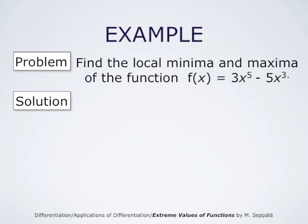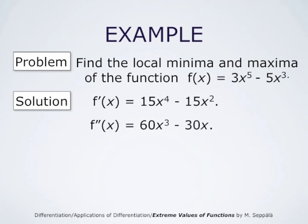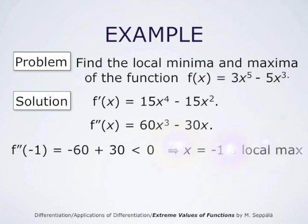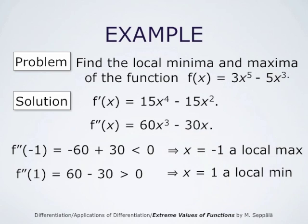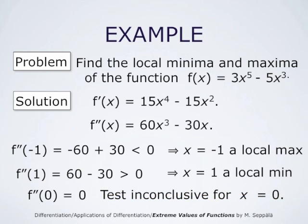We may also use the second derivative test for this function. f(x) = 3x to the power of 5 minus 5x cubed has first derivative 15x to the fourth minus 15x squared and second derivative 60x cubed minus 30x. f''(−1) = −60 + 30, which is negative, confirming that x equals negative 1 is a local maximum value point. f''(1) = 60 − 30, which is positive, confirming that x equals 1 is a local minimum value point. f''(0) = 0, so the test is inconclusive for x equals 0.